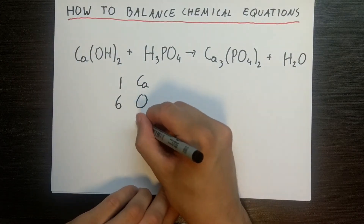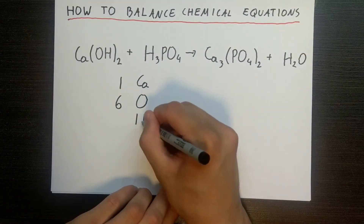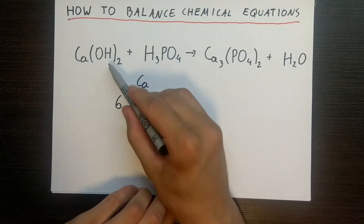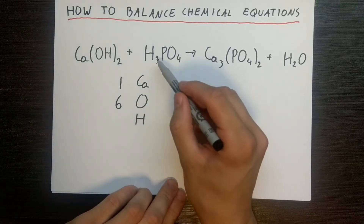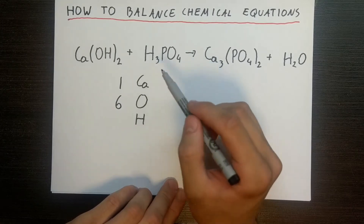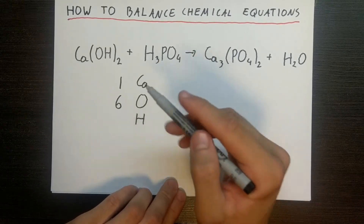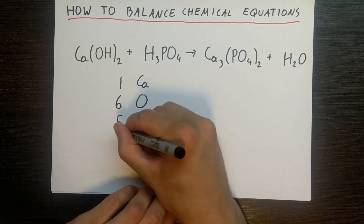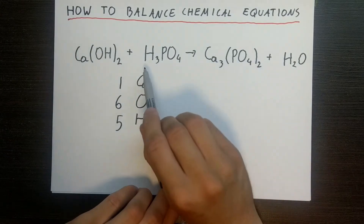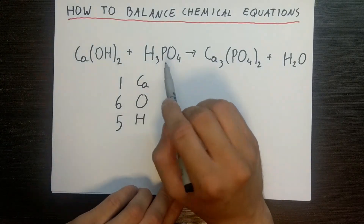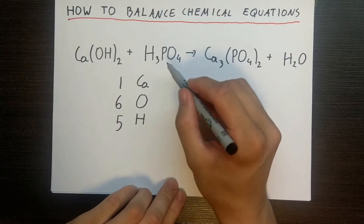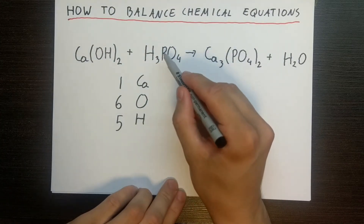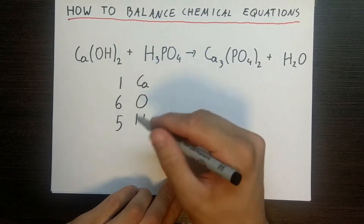Hydrogens: we have two hydrogens here, and we also have three hydrogens here, so we have five in total. And the final one is phosphorus, where we only have one on this side of the equation.